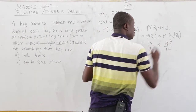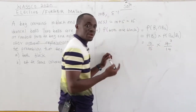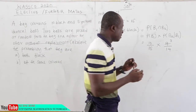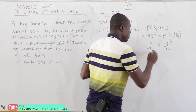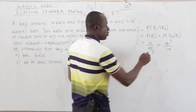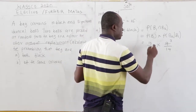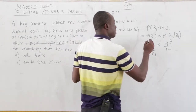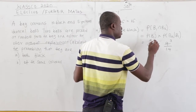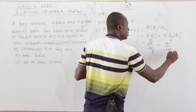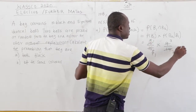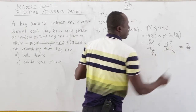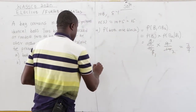Now we simplify: 3 goes into 9 three times, 3 goes into 15 five times. Then 5 goes into 10 two times, and 2 goes into 14 seven times. So our answer is 3 over 7.